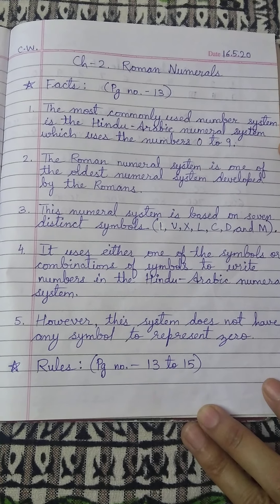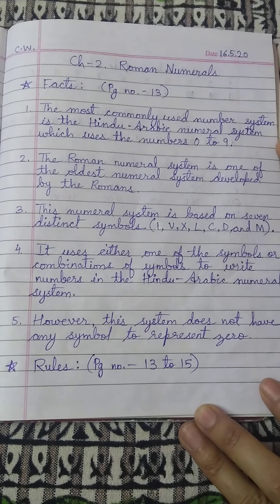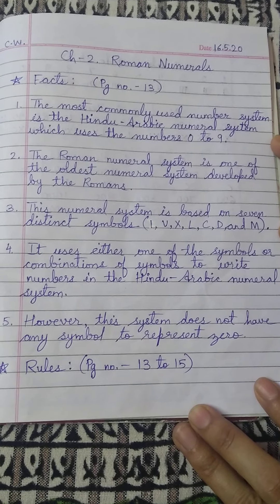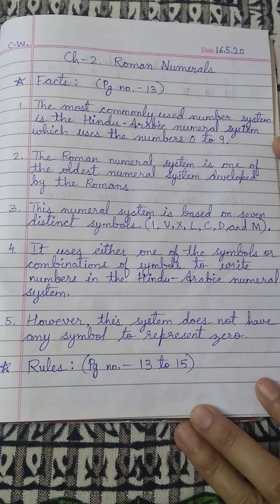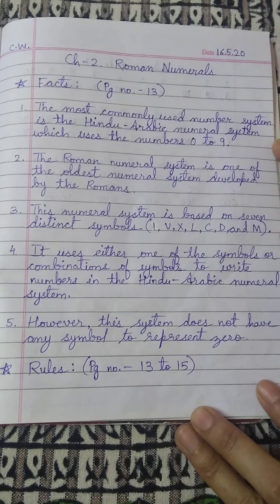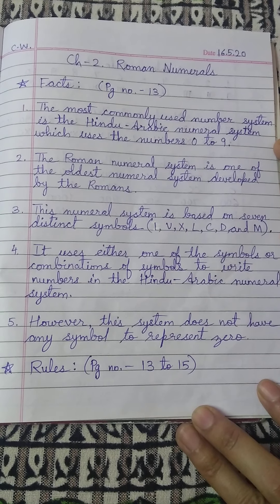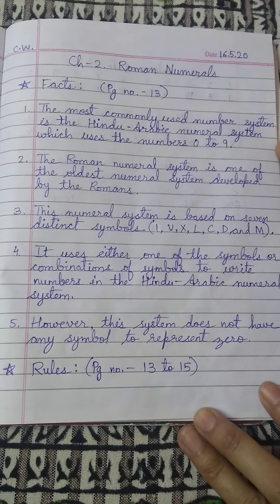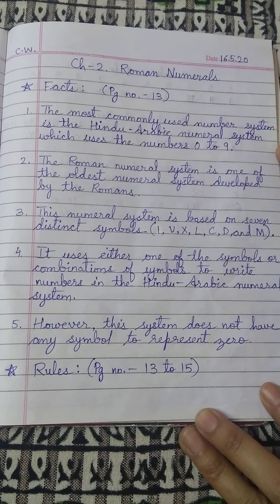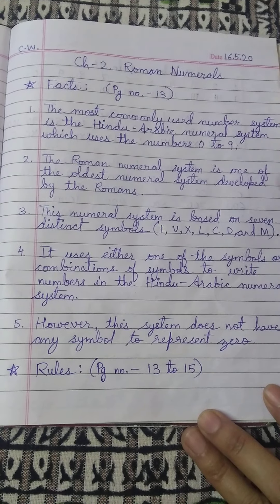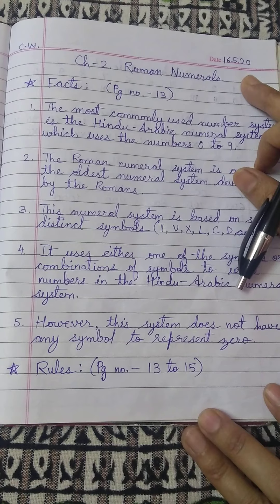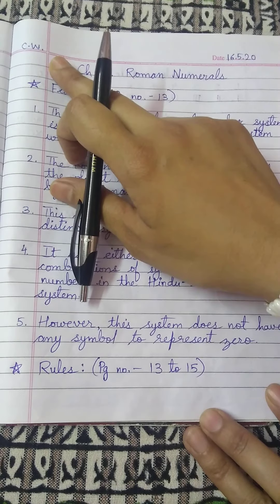Today we will start writing chapter number 2, roman numerals, in the notebook. As you all know that we have already learned this chapter and practiced as well in the rough copy. So how will you start this chapter in the copy? Here are some tips. Put today's date that is 16th May.